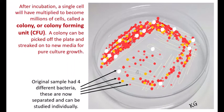After incubation, a single cell will have multiplied to become millions of cells called a colony or colony forming unit. While individual bacteria cannot be seen by your naked eye, a colony of millions of cells can be seen.